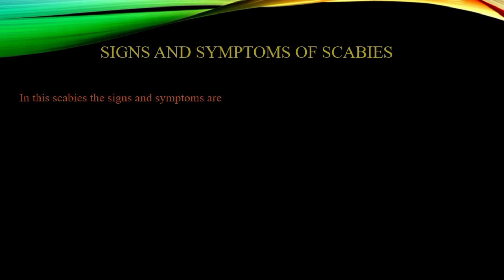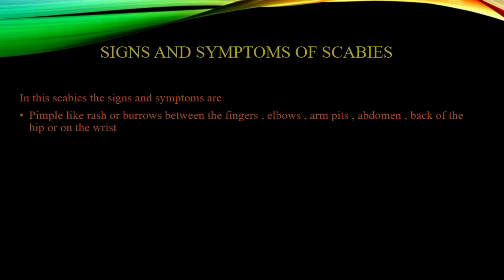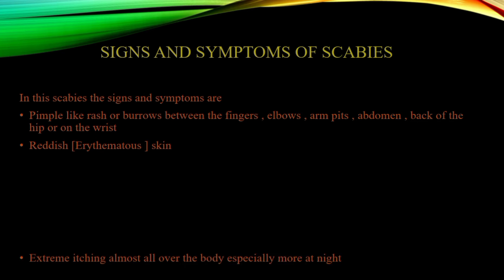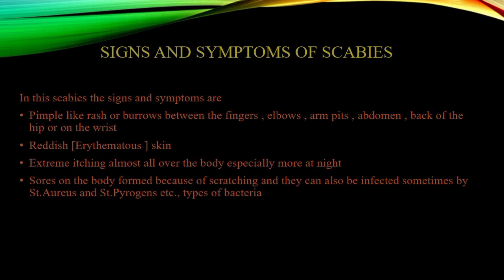First, what are the signs and symptoms of scabies? The signs and symptoms seen are pimple-like rashes or burrows between the fingers, elbows, armpits, and on the upper extremity region like the abdomen, back of the hip (buttocks), and the wrist region. Reddish, erythematous skin, extreme itching especially at night (nocturnal), and sores from scratching are also observed.